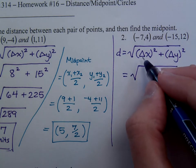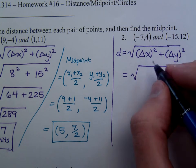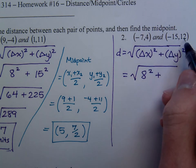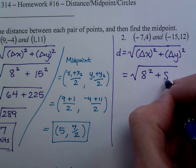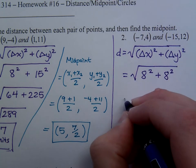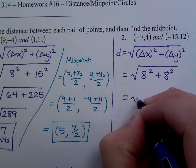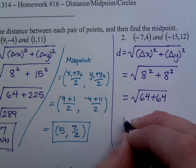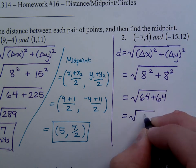So the change in x from negative 7 to negative 15 is a change of 8, so that's 8 squared. Plus from 4 to 12 is also a change of 8, so that's 8 squared. This is 64 plus 64, which is the square root of 128.